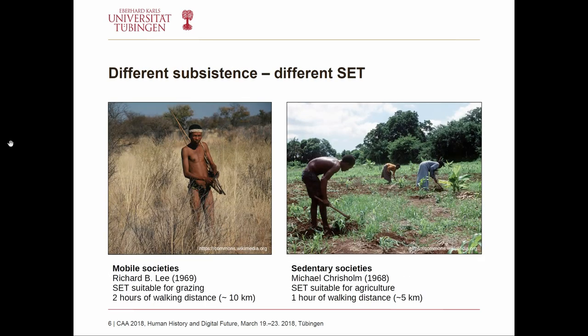They discussed subsistence strategies in both mobile and sedentary farming societies. Citing anthropologists, the main idea was that mobile societies have larger site exploitation territories than sedentary ones — an area of roughly 10 kilometers around the site, walking no more than two hours away to deal with daily subsistence like hunting and gathering. Farmers, by contrast, had smaller site exploitation territories because you have your farm and your fields nearby, with a suggested territory of about one hour's walking distance from the site.